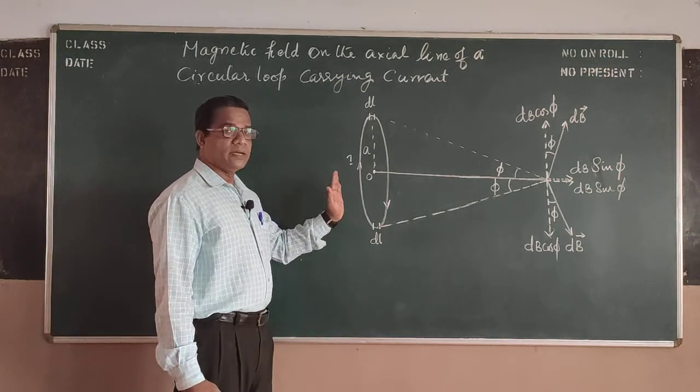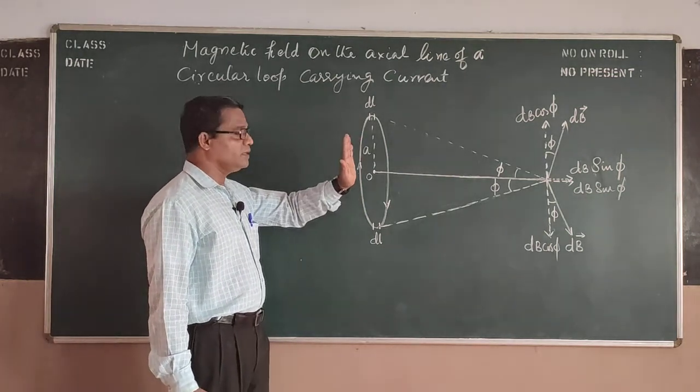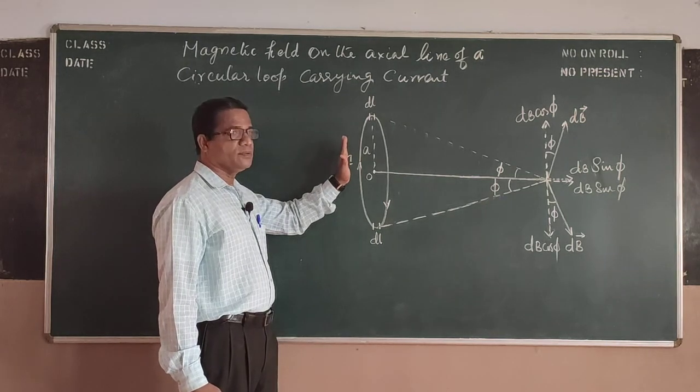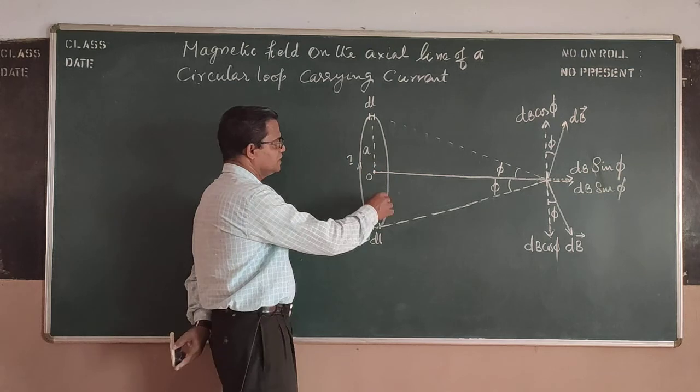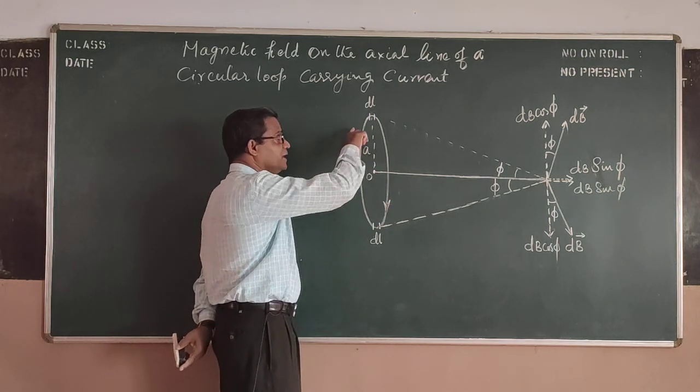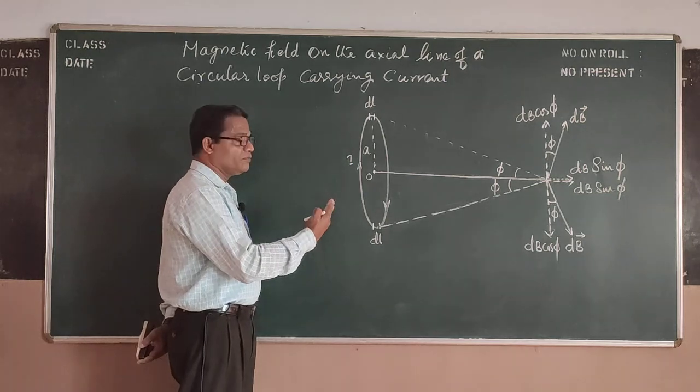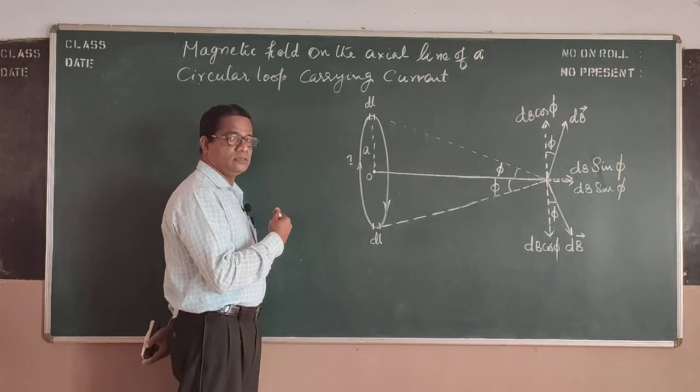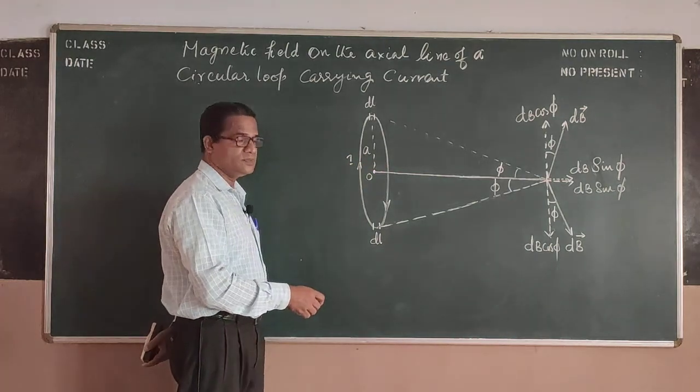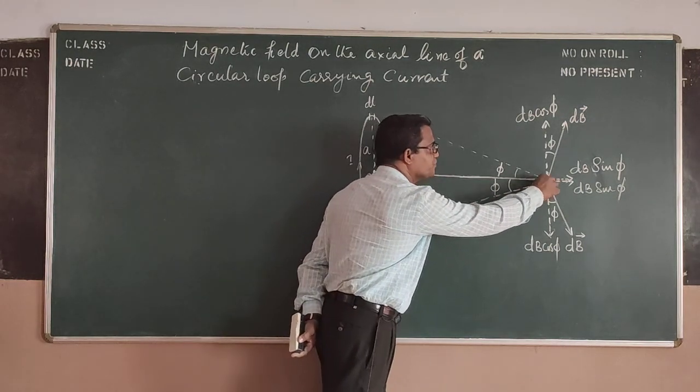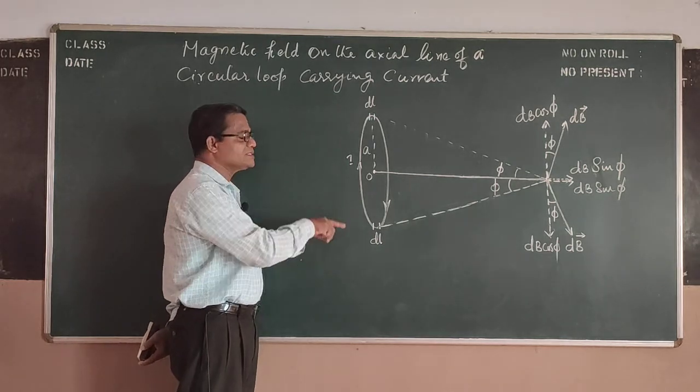Now I consider a circular loop here, cut perpendicular to the plane of the board, and carrying a steady current in such a way that as I look from behind the loop towards the point, let this be the point, then the current is going in clockwise direction.